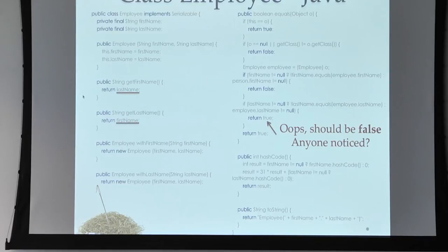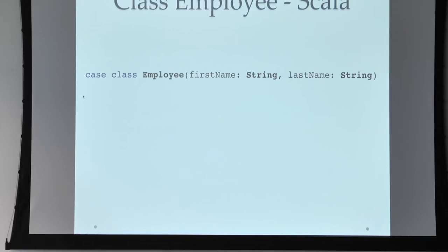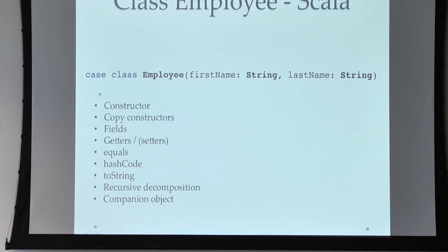An equivalent class in Scala looks like this. And in fact, what you get here is all of these. So the constructor is basically generated by the compiler. Same for the copy constructors. The getters and the setters, you do not need to write the boilerplate, but you can do that if you want to override and customize the behavior.